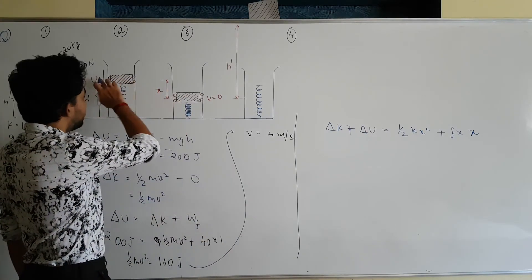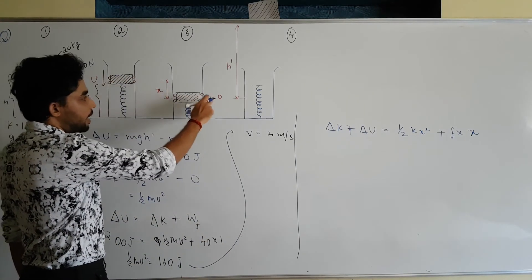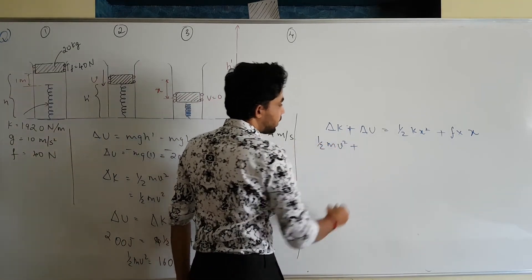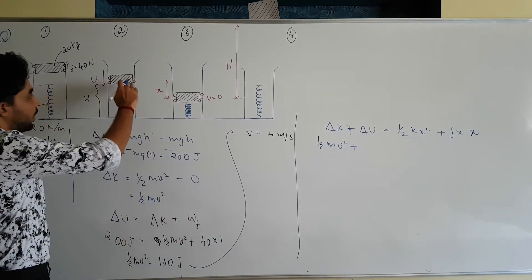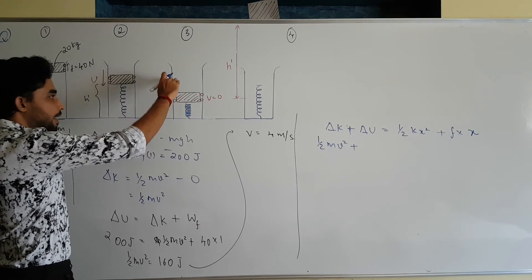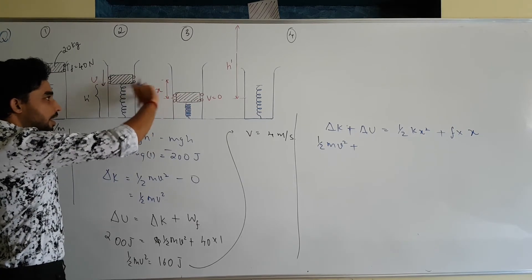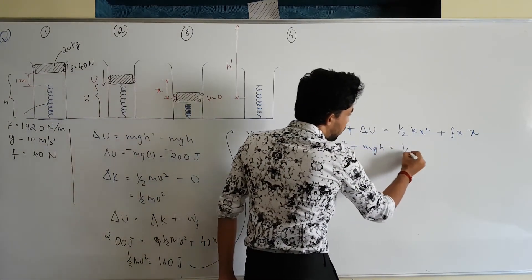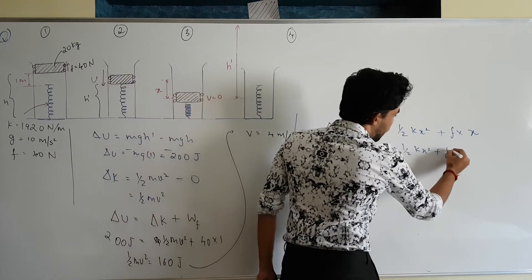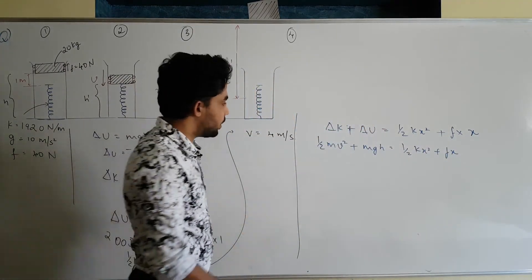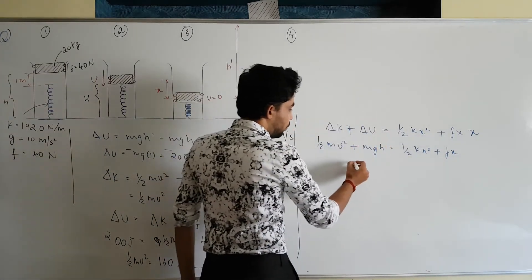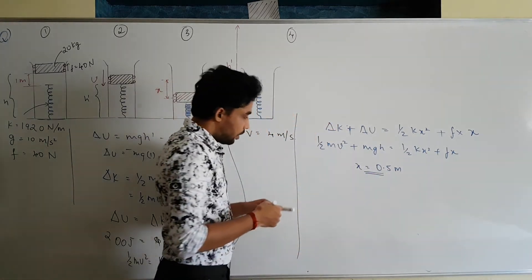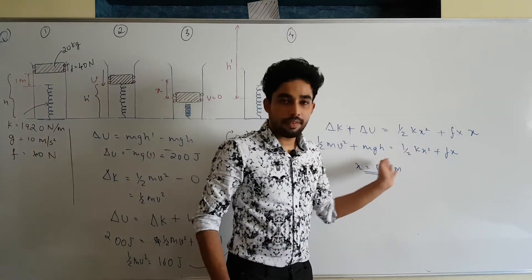Setting up the equation: ½mv² + mgx = ½kx² + f·x. Substituting the known values and solving the resulting quadratic equation gives x = 0.5 meters as the maximum compression of the spring.